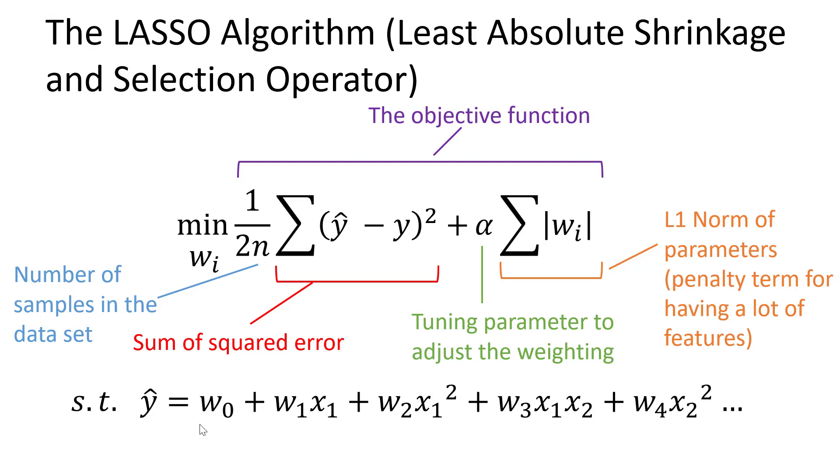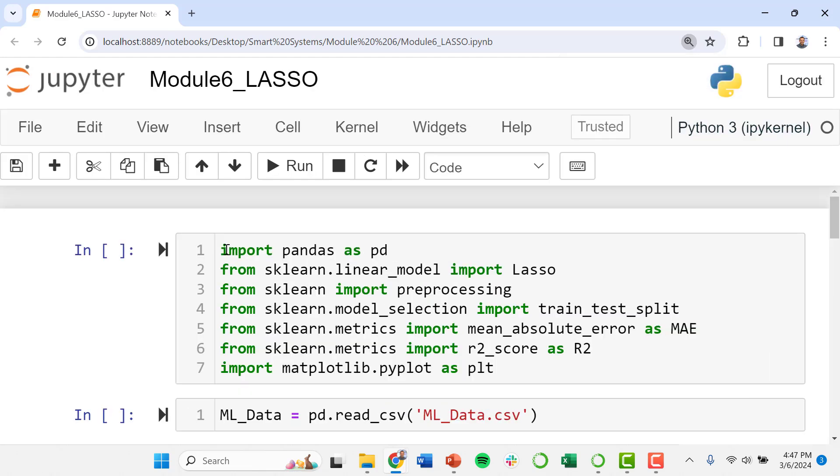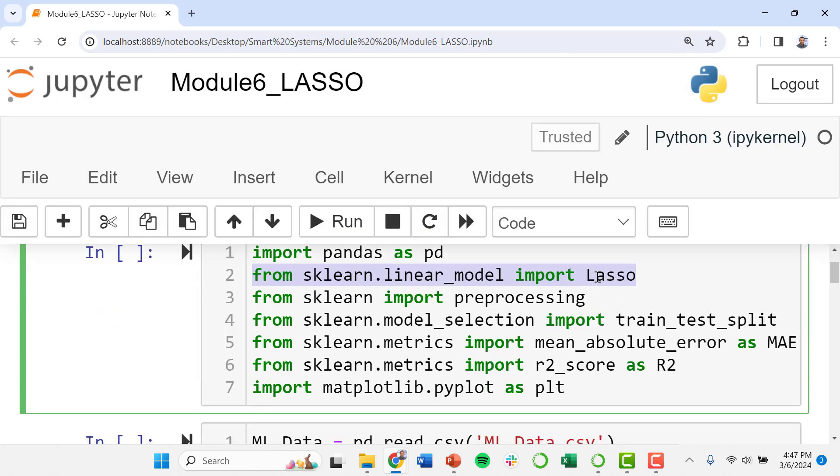The other way of thinking of this L1 norm of parameters is a penalty term that penalizes your objective function for having a lot of features. You could have a very complex model if you're dealing with features that are polynomial in nature, like x1, x1 squared, x1 times x2, x2 squared. You want to be able to identify which of these features have the biggest statistical impact on your model. Let's go back to the same example we've been covering. Here's my Jupyter notebook. At the top we are importing all the different toolboxes we need. From the sklearn toolbox we're going to import this tool called LASSO, capital L-A-S-S-O.